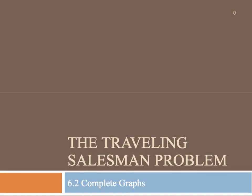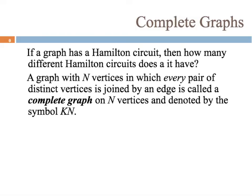This section is on complete graphs. If a graph has a Hamilton circuit, then how many different Hamilton circuits does it have? A graph with n vertices, where every pair of distinct vertices is joined by an edge, is called a complete graph on n vertices, denoted by k sub n.